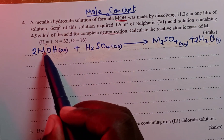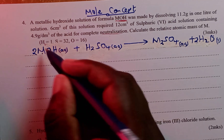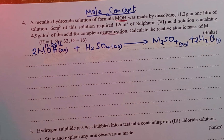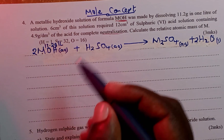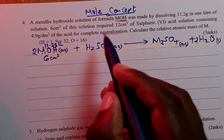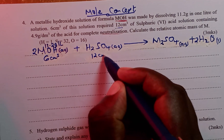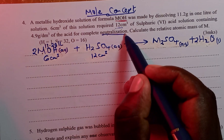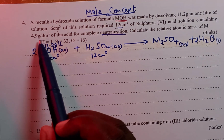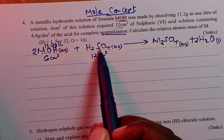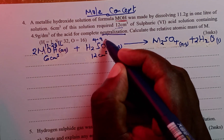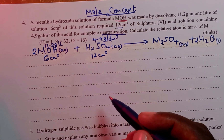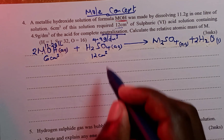We have been told that the solution of the base was made by dissolving 11.2 grams in 1 liter. In this solution, 6 cm³ of the base required 12 cm³ of the acid for complete neutralization. We also know the number of grams dissolved in one liter to prepare the acid, which is 4.9 grams per dm³. We are going to begin this question by getting the molarity of the acid.